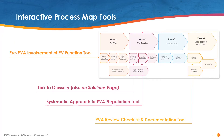In the interactive process map, the user can click any phase or step to learn more about that part of the process. Bolder steps indicate that there are tools that can be downloaded or links to other solutions such as the glossary.